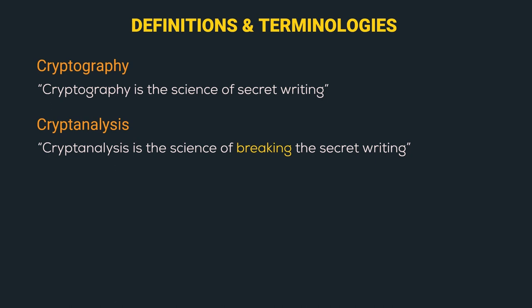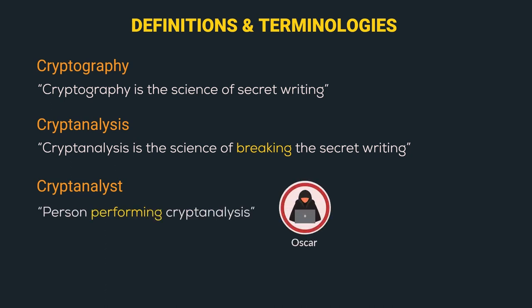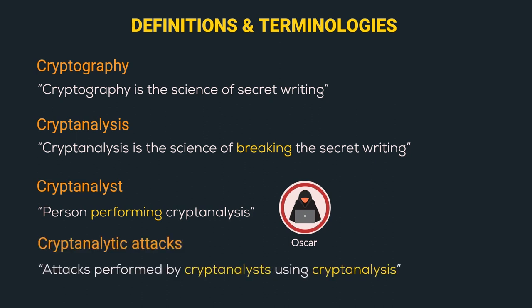In cryptography, we try to hide the information, while in cryptanalysis we try to uncover the hidden information. The next is cryptanalyst — a cryptanalyst is a person performing cryptanalysis. As you would have guessed, Oscar is a cryptanalyst. Cryptanalytic attacks are attacks performed by a cryptanalyst using cryptanalysis.